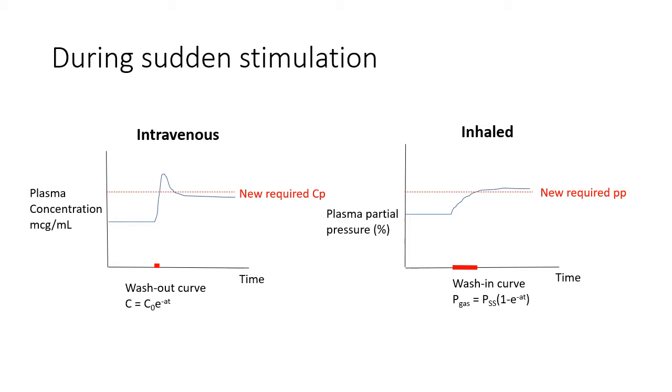The same is true if we want to reduce the depth of anaesthesia quickly. With an intravenous infusion, we can simply cease administration and the plasma concentration will fall. It is very cumbersome to do the equivalent with inhalational anaesthesia. This rapid titratability of intravenous infusions is a crucial advantage that the intravenous route has over the inhalational route.